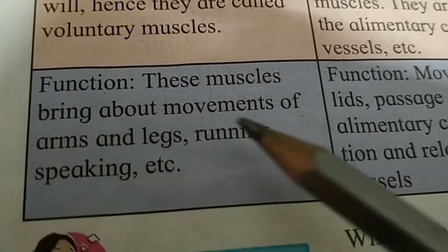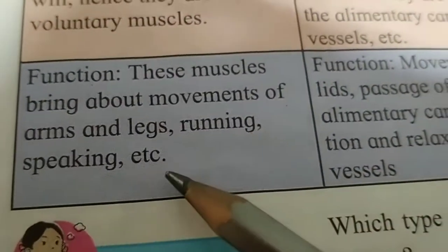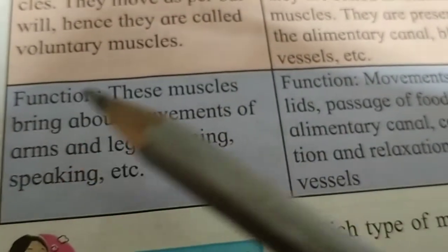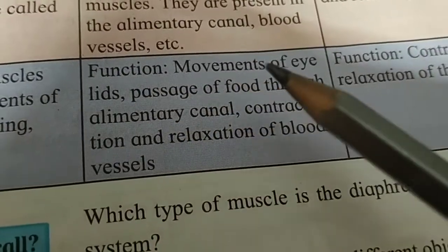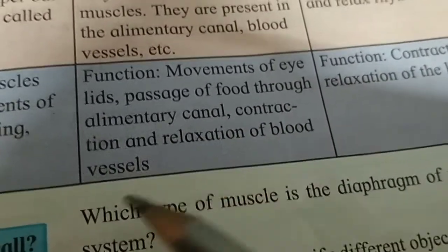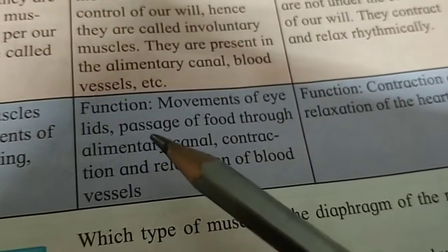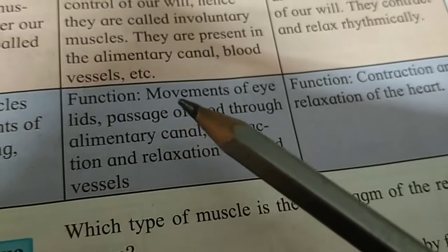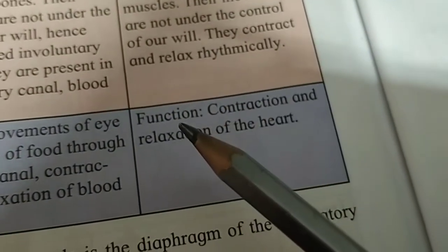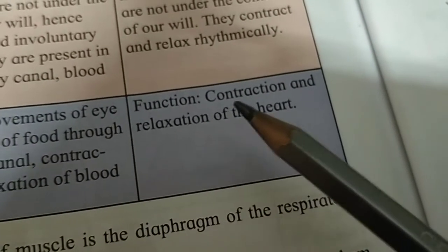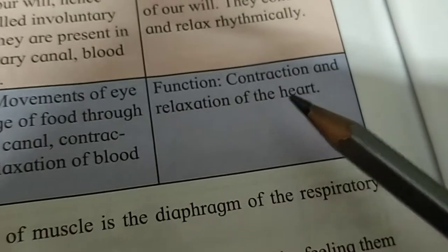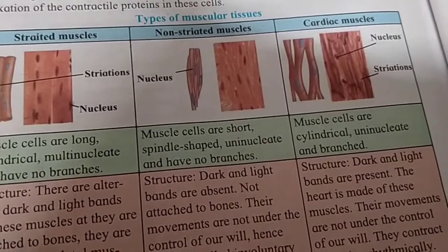Striated muscles bring about the movement of arms, legs, running, speaking, etc. Non-striated muscles control movement in the alimentary canal and contraction and relaxation of blood vessels — functions not under our will. I think you must have understood about the types of muscular tissues.